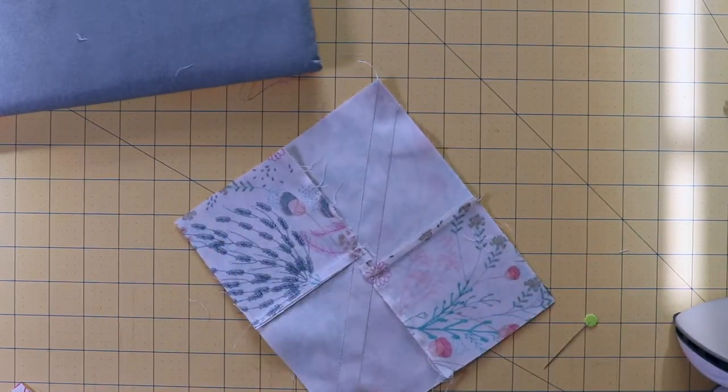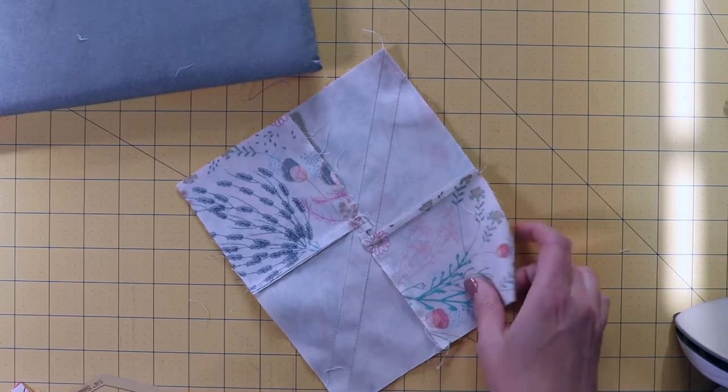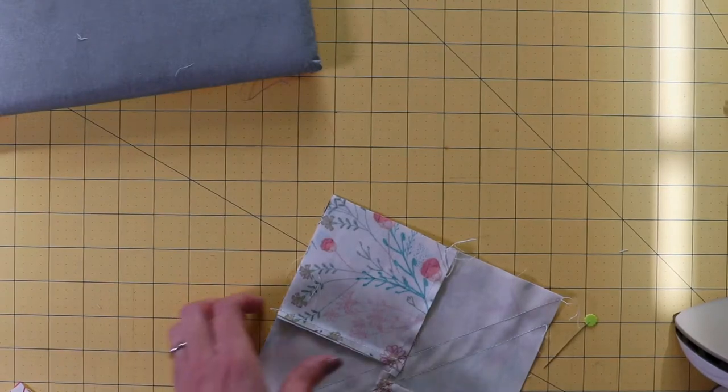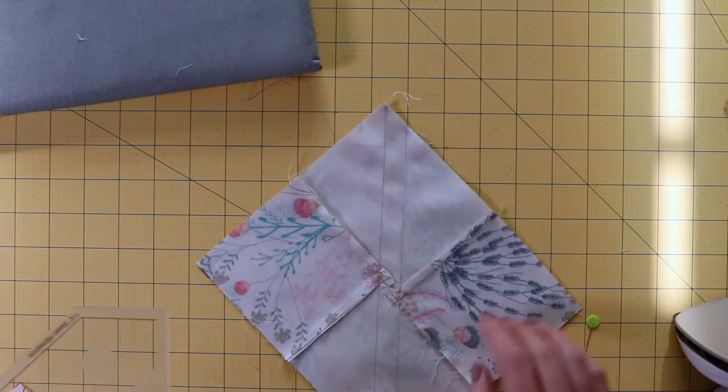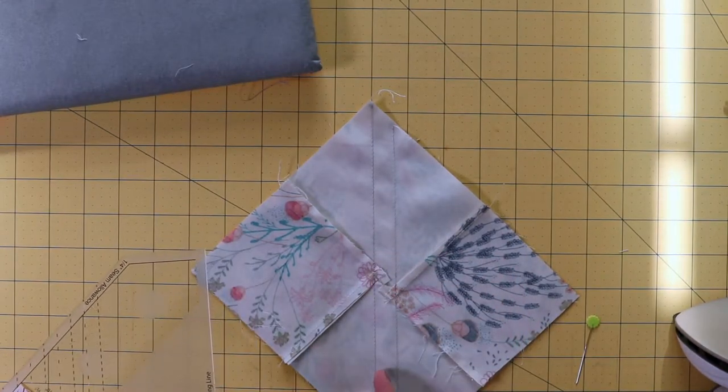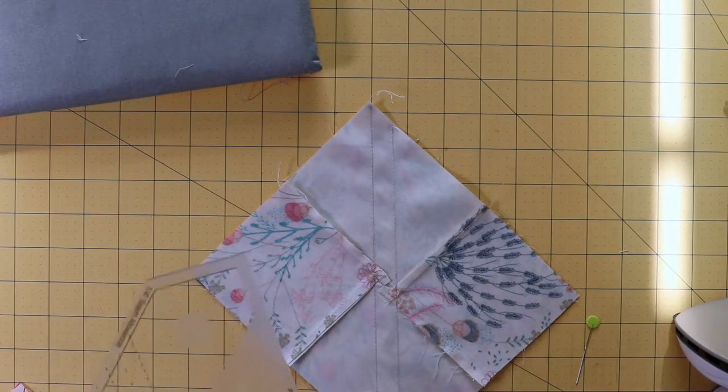And now we need to cut these apart, so we have two blocks that we'll create with this. So now that we've sewn it, we're going to actually do a quarter inch from the sewing line towards the center here. Don't go on the other side, because then you're going to ruin your block.